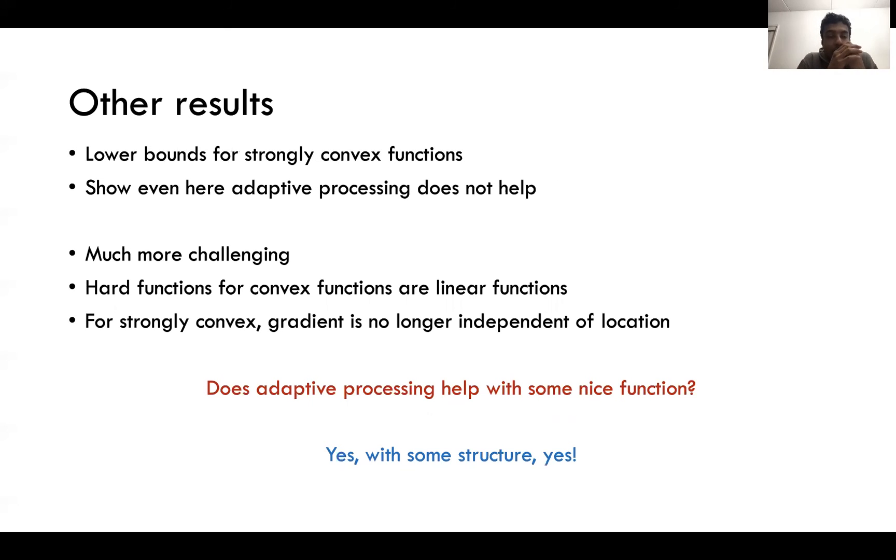After proving these results for convex functions we consider strongly convex functions and show that even there adaptive processing of gradients does not help. However it's a much more challenging problem partly because our hard function class for convex functions are actually linear functions. For strongly convex functions it turns out that unlike linear functions whose gradient may not depend on the exact location where we are taking the gradient at, for strongly convex functions they do and this leads to interesting hurdles that we have to pass. This shows that both for convex and strongly convex functions adaptive processing of gradients do not help.